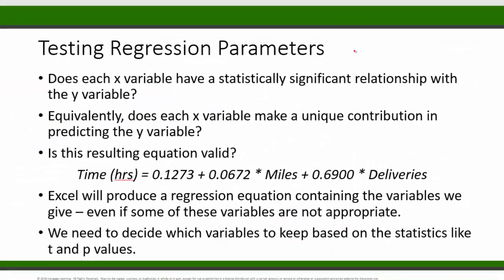Now that we know our residuals satisfy the conditions for reliable inference, we can assess our model to see that we're using the appropriate x variables to predict y. The question is: does each x variable really belong in the regression for predicting y? Does each x variable have a statistically significant relationship with the y variable — that is, does each x variable make a unique contribution in predicting y? You wouldn't want to include an x variable that is not helping us predict y.